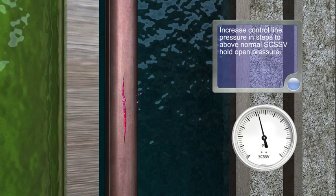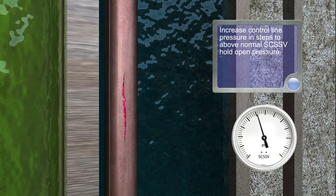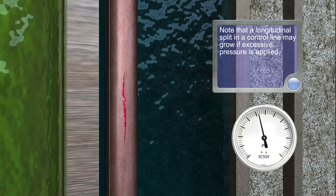Increase control line pressure in steps to above normal SCSSV hold-open pressure. Note that a longitudinal split in a control line may grow if excessive pressure is applied.